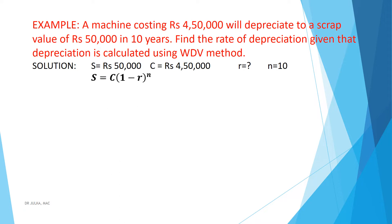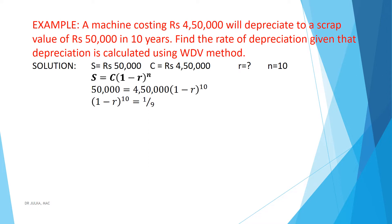We know that S equals C multiplied by (1 minus R) whole raised to the power N. Putting C equals 4,50,000, S equals 50,000, and N equals 10, we get 50,000 equals 4,50,000 multiplied by (1 minus R) raised to the power 10. After calculation we get (1 minus R) raised to the power 10 equals 1 by 9.